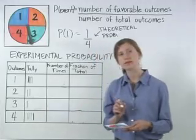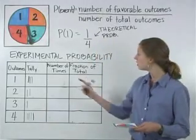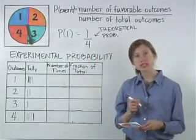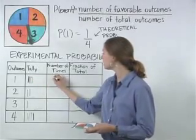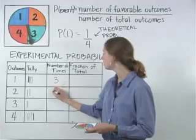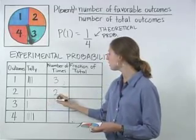Now, to count the number of times, simply count the tally marks. One was spun three times, two was spun two times, three was spun one time, and four was spun four times.